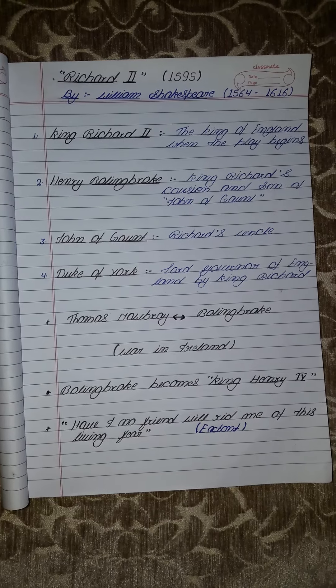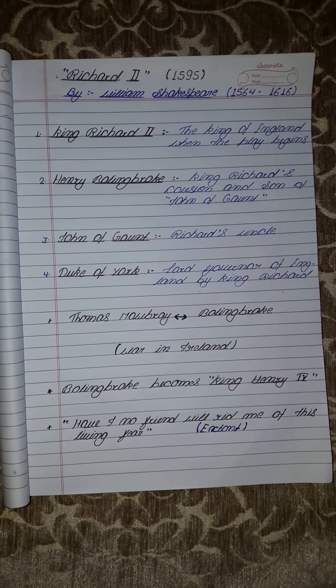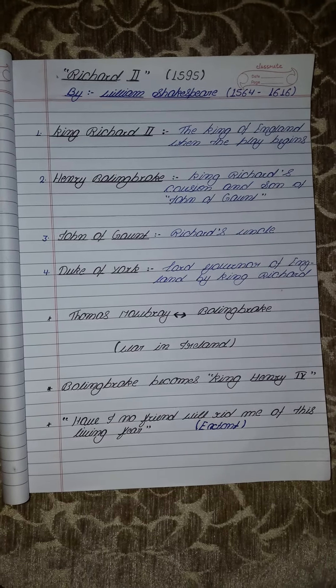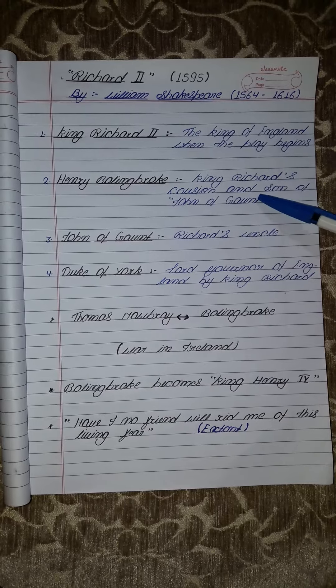The next character is John of Gaunt. John of Gaunt is Richard's uncle — yeh Richard II ke uncle hai — and he is Henry Bolingbroke ke father hai.